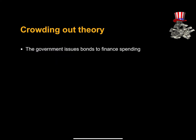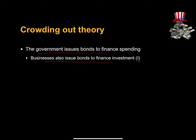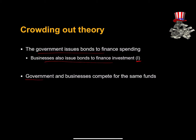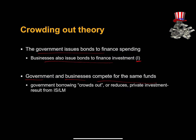Let's start with crowding out. The government issues bonds to finance spending. Businesses also issue bonds to finance investment, and those funds come from the same place. If the government and businesses are both issuing bonds, they must compete for the same funds. As a result, government borrowing crowds out or reduces private investment, the interest rate is higher, and firms invest less.